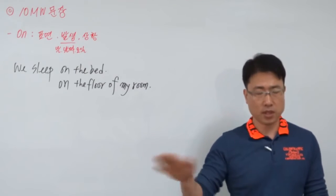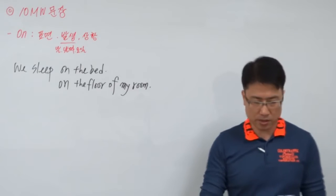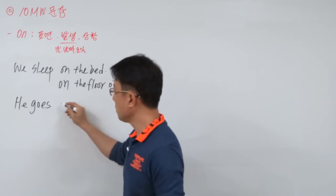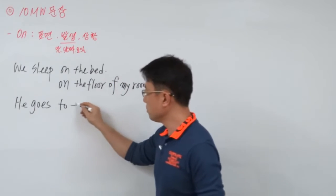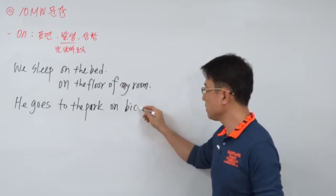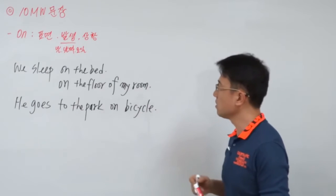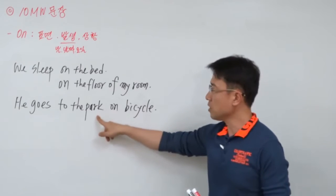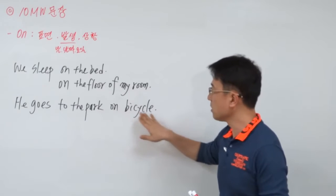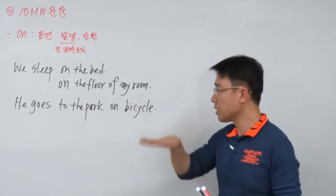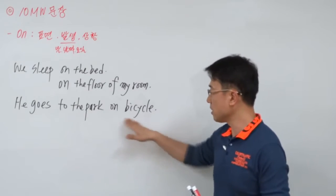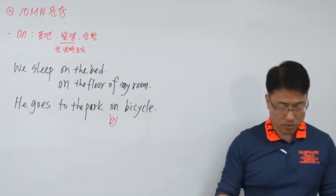On bicycle — 표면인데 자전거 표면이다 그런 얘기고요. He goes to the park — 그가 공원으로 갑니다. 표면에서 bicycle 표면에서 간다 그런 얘기죠. 자전거 위에 있는 공원이 아니고요, 공원을 가는데 자전거 표면에서 간다는 얘기 — 자전거 안장 표면에 타고 간다 그런 얘기죠. 그래서 뭔가 타고 갈 때 안장에 타고 가니까 on을 쓰시면 되고요.